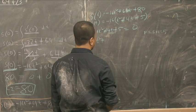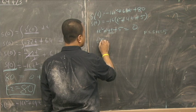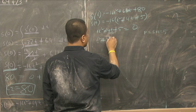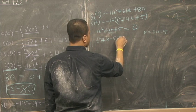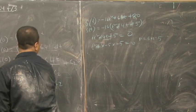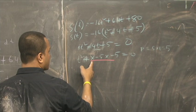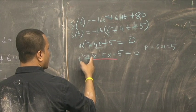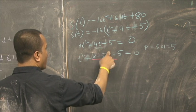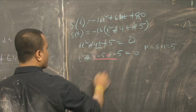So this is t squared plus 5t minus t minus 5. How did I get plus 5t and minus t? The product of these two is 5 and the sum is 4t.